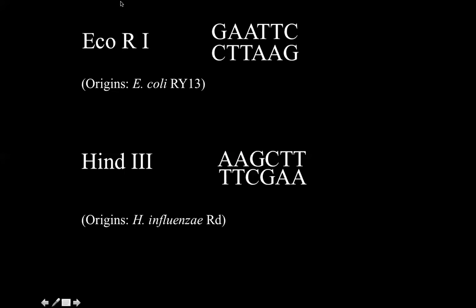Here are the names of a couple of restriction enzymes: ECO-R1 and HIN-D3. Beside the name of each enzyme is what we call a recognition sequence. ECO-R1 will only cut a strand of DNA if it finds this six-letter sequence, and that's where it will cut. HIN-D3 will only cut if it reads this six-letter sequence, A-A-G-C-T-T. So these enzymes are extremely selective about where they will cut a DNA sequence.